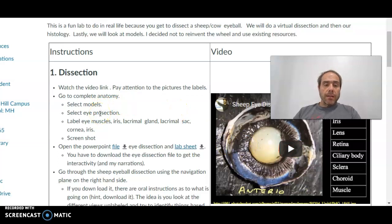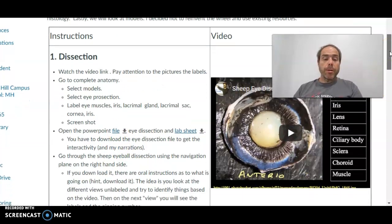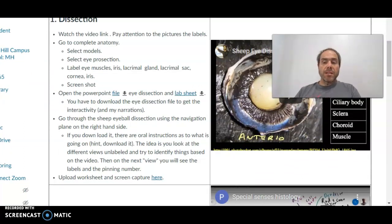So what I want you to do is watch my video link, then go to complete anatomy. Select models, select secretion, protection of the eye. Go through and label the structures, take a screenshot, then open and download this PowerPoint file. You have to download it to your computer. It's a PowerPoint presentation, not a PowerPoint file. And I have recorded going through the cow eyeball dissection. Fill out this worksheet as you go. If you just open it in here, it's not going to have my narrations. It's going to think it's a regular PowerPoint. So go through, use the navigation bars on the side and do the cow eyeball dissection.